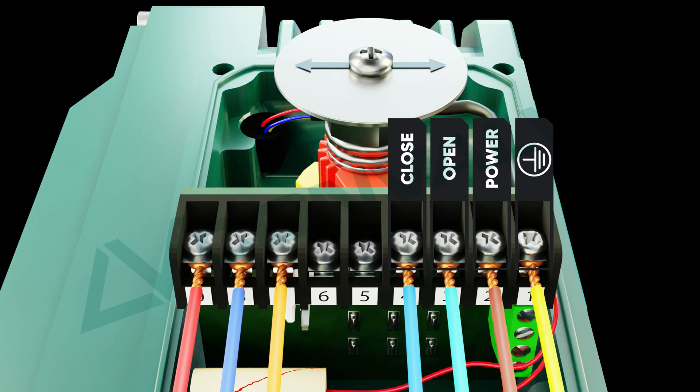To rotate or close the actuator in the clockwise direction, apply power to terminal 2 and terminal 4. The actuator will rotate clockwise until it reaches the internal limit switch and then shuts off.